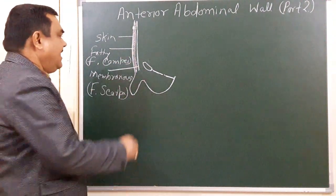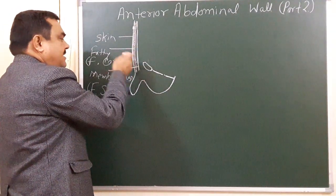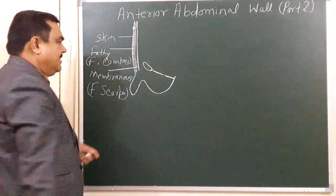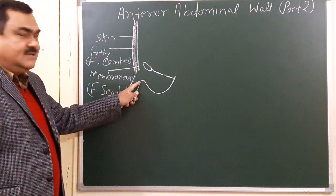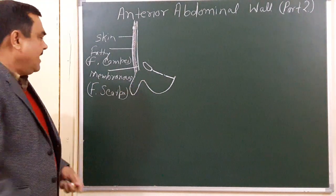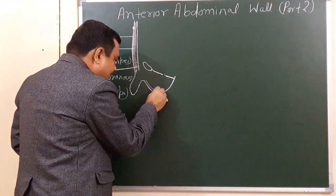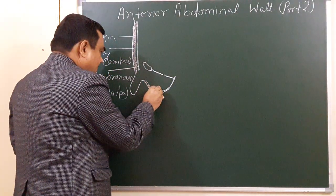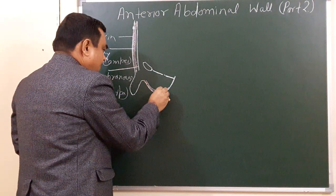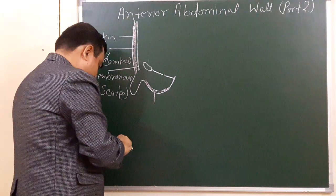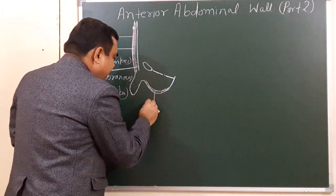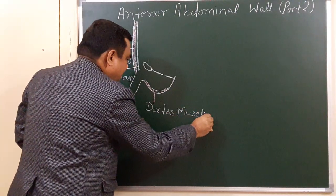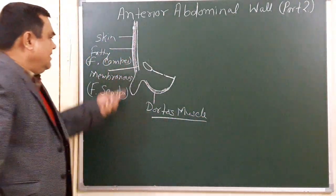The fatty layer, fascia Camper, is present in the lower part of the anterior abdominal wall. However, in the penis this layer is absent, and in the scrotum this layer is replaced by dartos muscle.